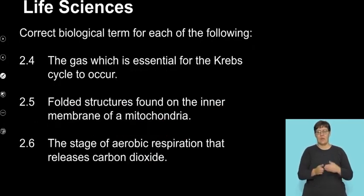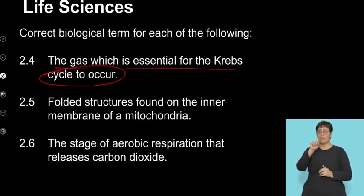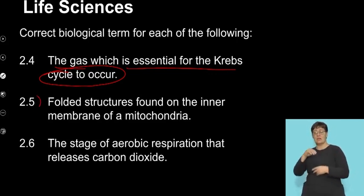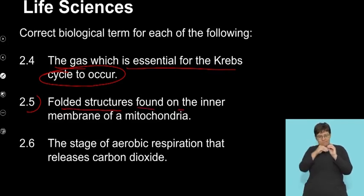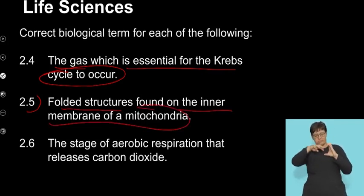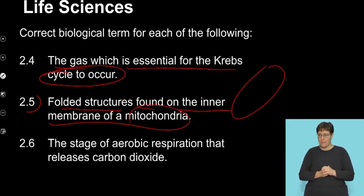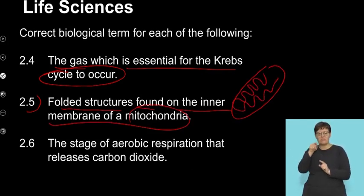We've got three more, and we'll wrap this segment up. The gas, which is essential for the Krebs cycle to occur. We know that the Krebs cycle is the second stage that we look at. I'm going to give you a moment to reflect on that. 2.5. The folded structures found on the inner membrane of the mitochondria. As a quick recap, we know that there are folds on the inner membrane, so this points to those folds. And 2.6. The stage of anaerobic respiration that releases carbon dioxide.